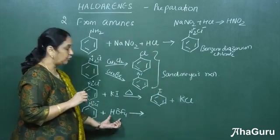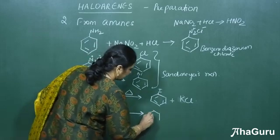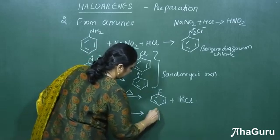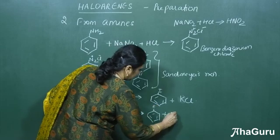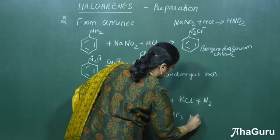If we take fluoroboric acid here, then we will get the fluorine substituted benzene plus BF3. In both these cases, N2 gas will be liberated.